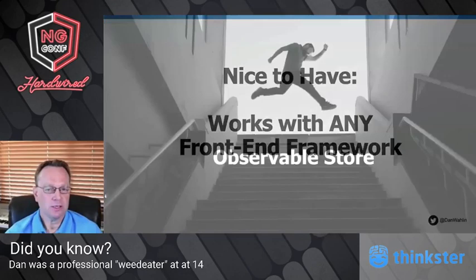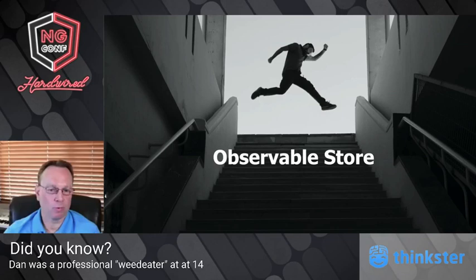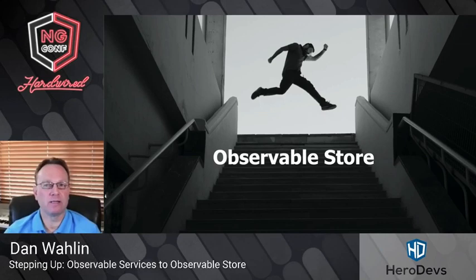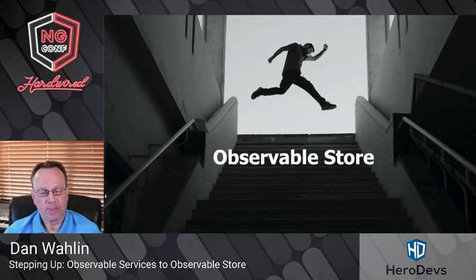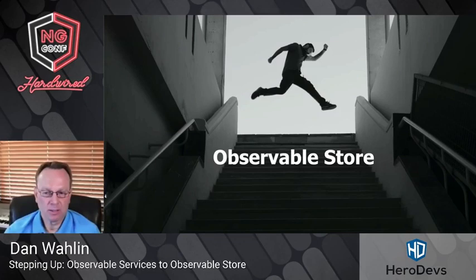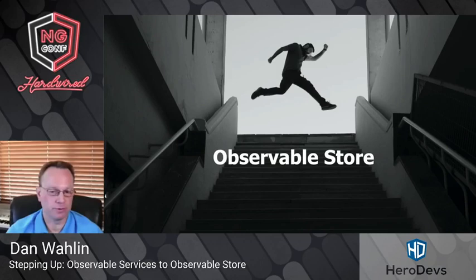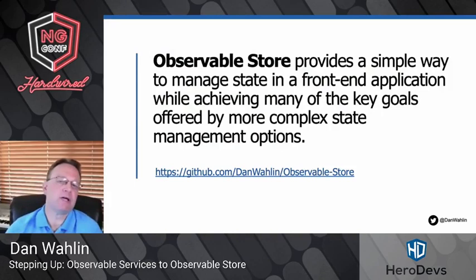Observable Store came out of a prototype a couple years ago. I was working with a larger company and they wanted the equivalent of an observable service — something that could notify other parts of the app that something changed — but they also needed store functionality. They'd gone with another solution but had a bunch of new hires having productivity problems because not everybody knew what was going on. Myself and another person started putting together a prototype that eventually grew into this library called Observable Store.